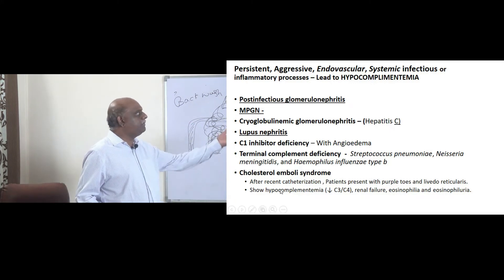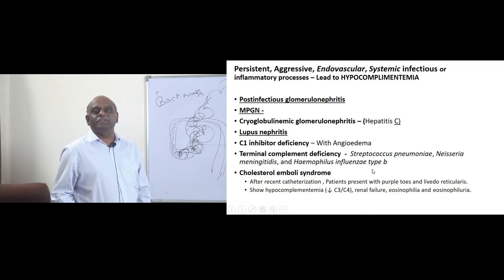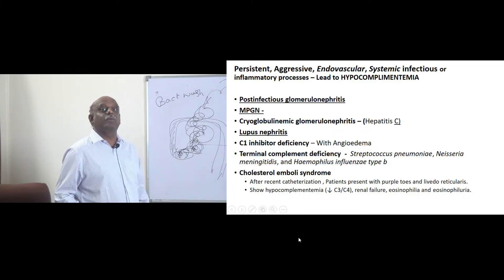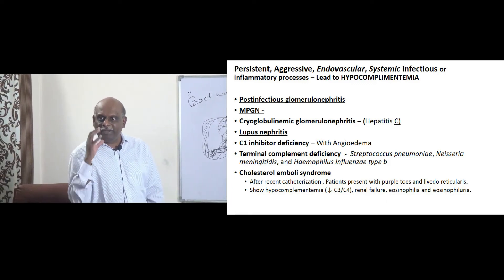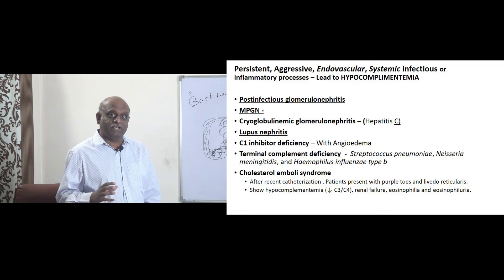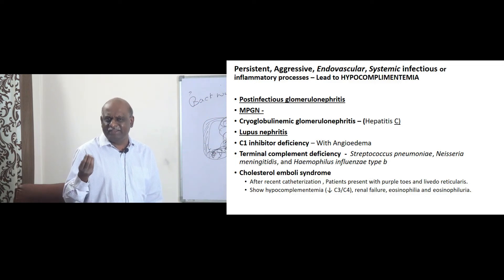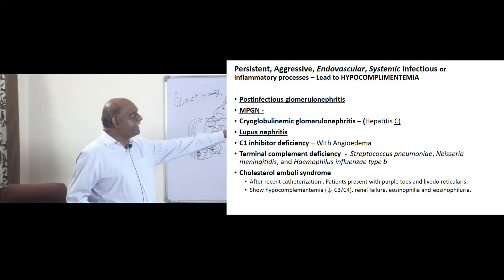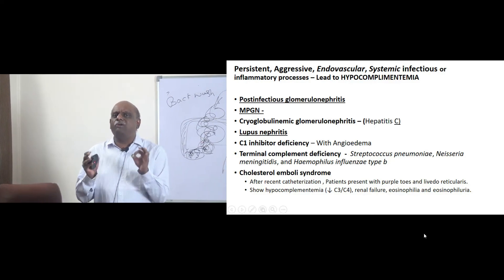Terminal complement deficiencies are associated with infections by encapsulated organisms like Streptococcus pneumoniae, Listeria, etc. For encapsulated organisms to be captured, you require opsonization. The terminal complement components — C5, C6, C7, C8, C9 — are the opsonins. So if there is no opsonization, you get encapsulated organism infections.